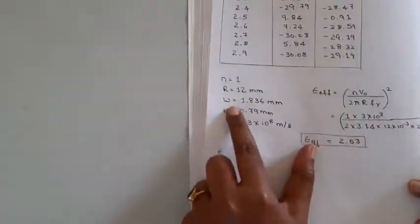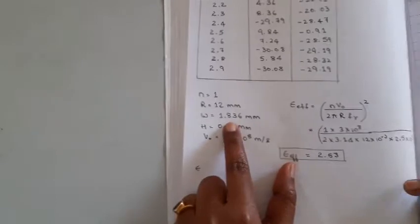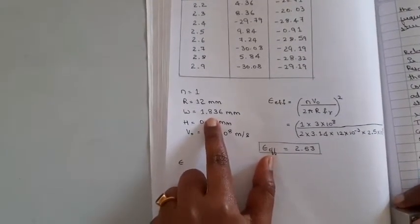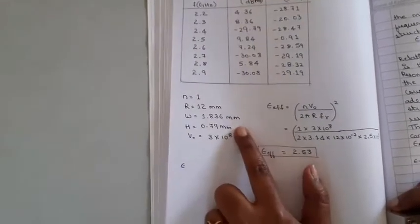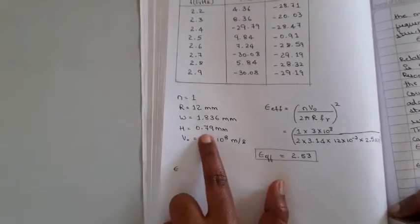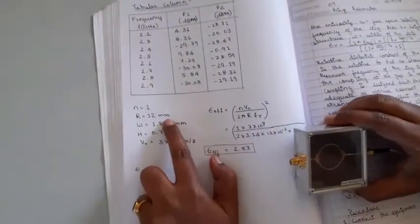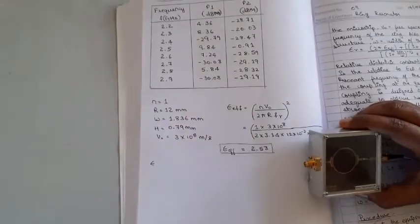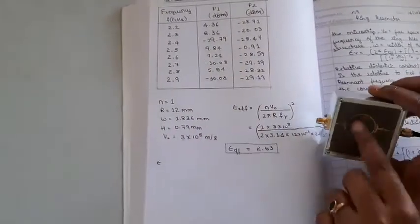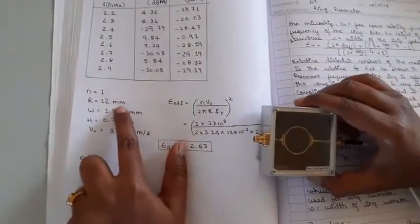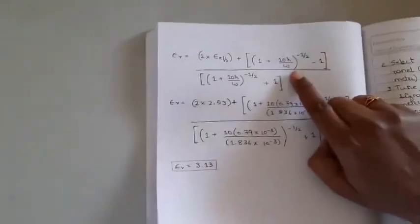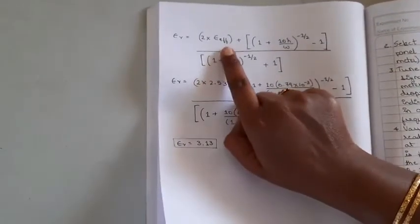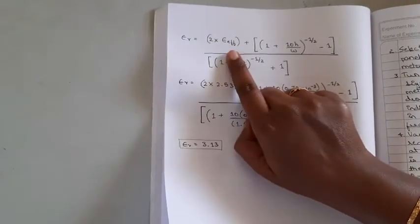The width of the duroid material — that is, the substrate of the ring resonator — is 1.836 millimeters, and the height of the duroid material is 0.79 millimeters. The radius of this ring resonator is given as 12 millimeters. So the width and height of the material are known, and the radius of this conducting ring is 12 millimeters. The unknown value here is the effective permittivity, epsilon_r effective.